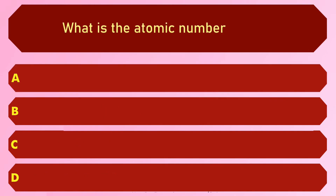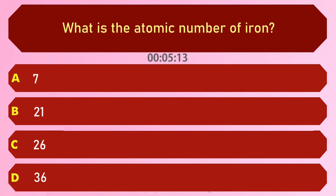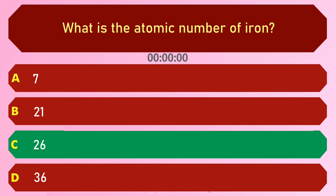What is the atomic number of iron? Options are: A) 7, B) 21, C) 26, and D) 36. The answer is option C, 26.